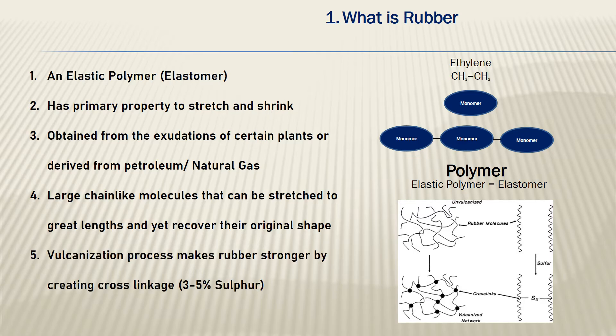Through the vulcanization process, three to five percent of sulfur is added, so the rubber gets stronger and can be processed for multiple applications.